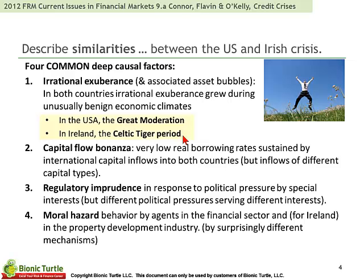In Ireland, they called that the Celtic Tiger period. Second commonality: capital flow bonanza — very low real borrowing rates sustained by international capital inflows into both countries. Third, regulatory imprudence in response to political pressure by special interests. And fourth, moral hazard behavior by agents in the financial sector.